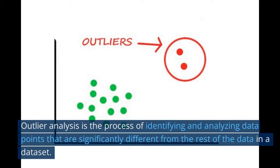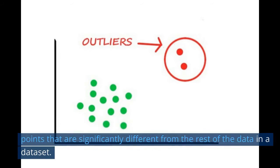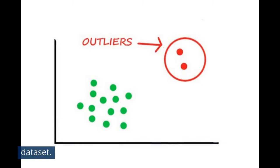Starting with what is outlier analysis — it's the process of identifying and analyzing data points that are significantly different from the rest of the data in a dataset.